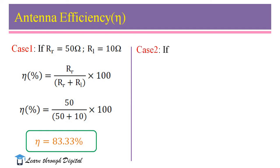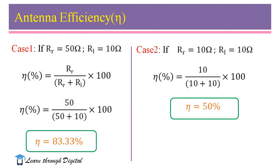Next, I am considering case 2, where RR is 10Ω and RL is 10Ω. Now, we calculate η = 50%. Now, you compare the values of η in case 1 and case 2.